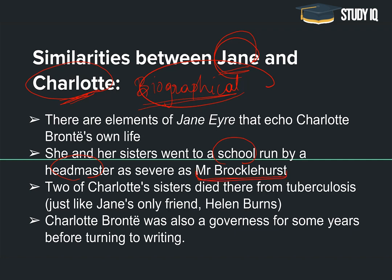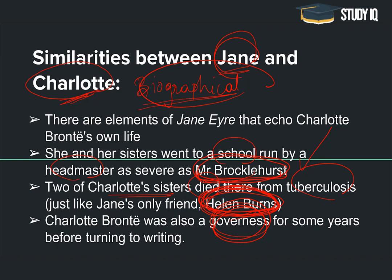Charlotte Brontë's own experience was also connected to a school, and the school's headmaster in this novel — Jane Eyre's headmaster Mr. Brocklehurst — was very strict, with very strict rules followed. Similarly, two of Charlotte Brontë's sisters also died from tuberculosis, and Helen Burns, who is Jane's friend, reflects this. Charlotte Brontë was also a governess, because at that time women had very limited opportunities — before marriage, she was a governess.